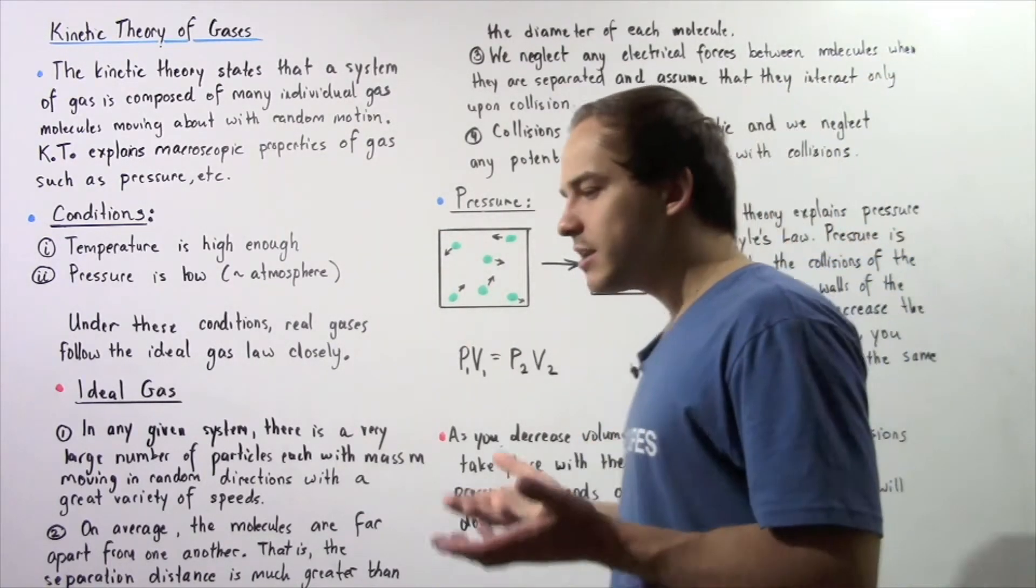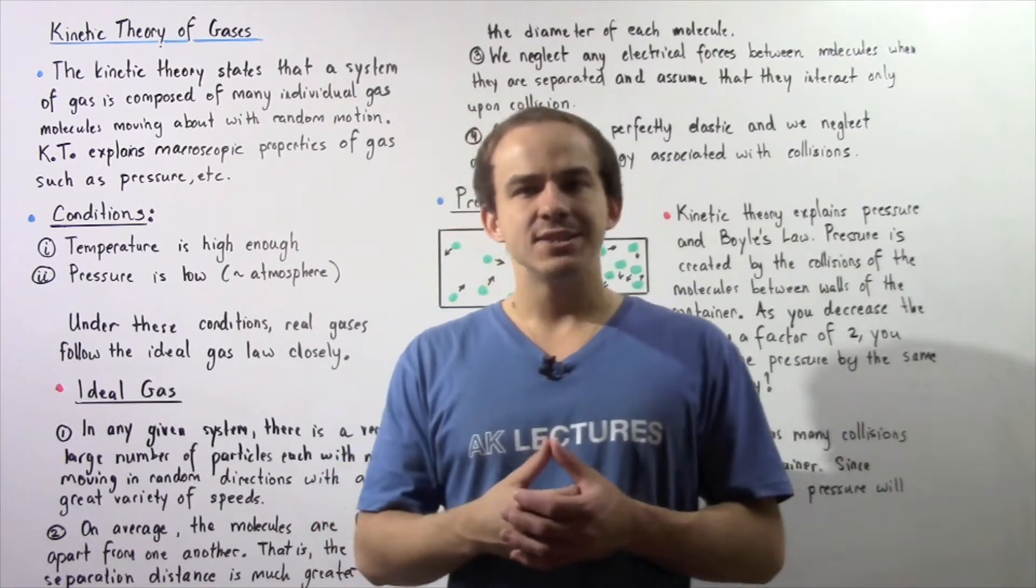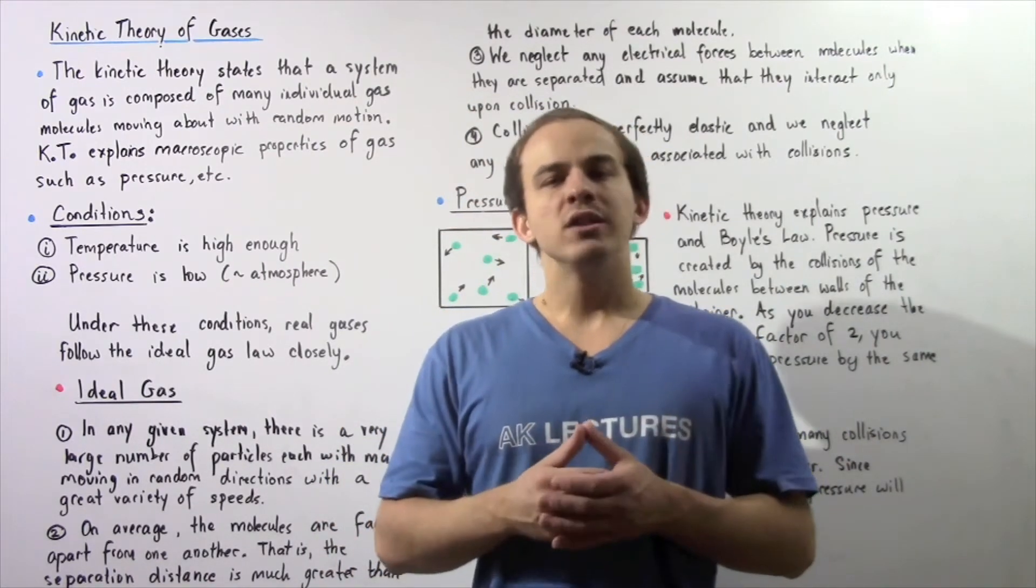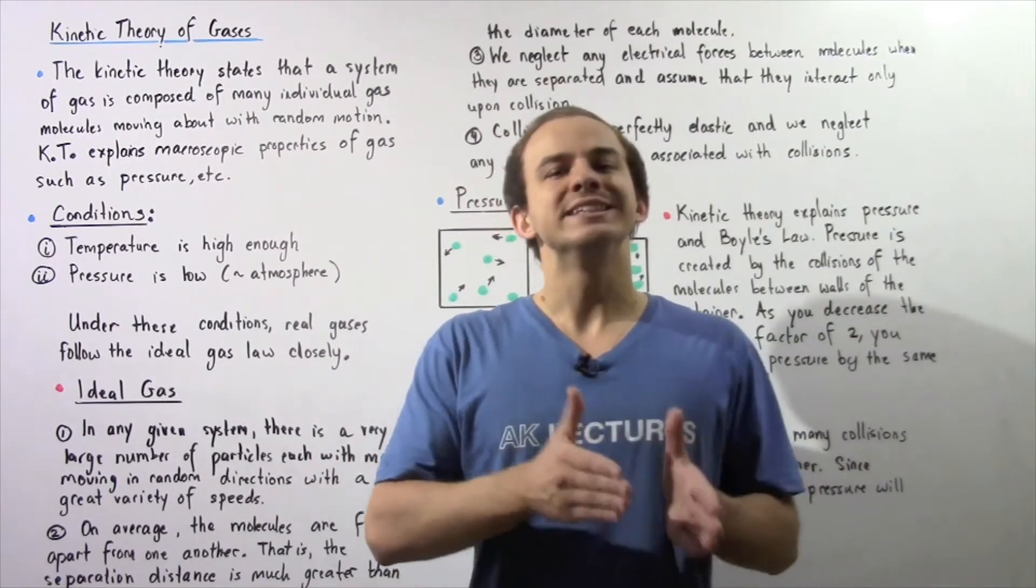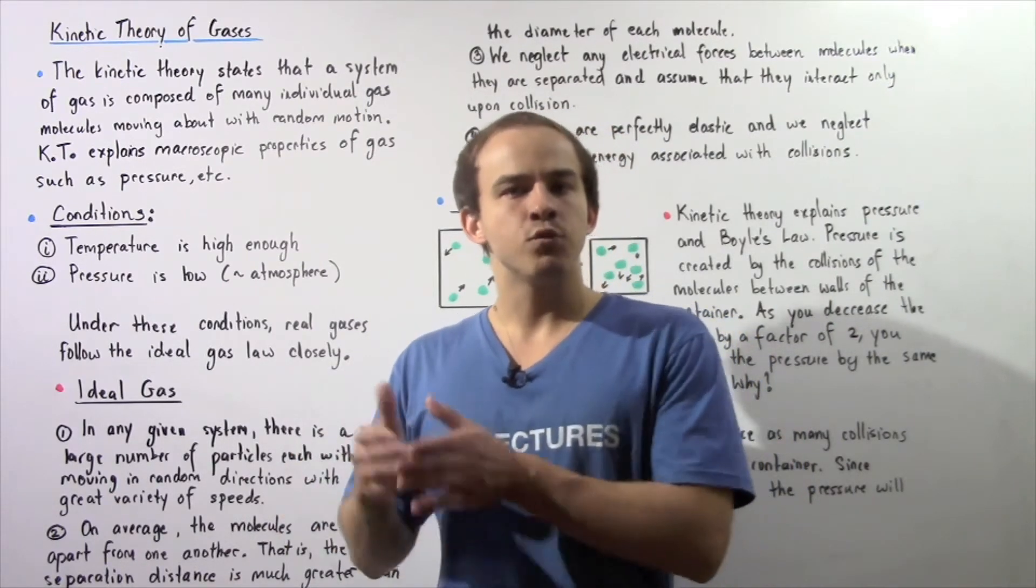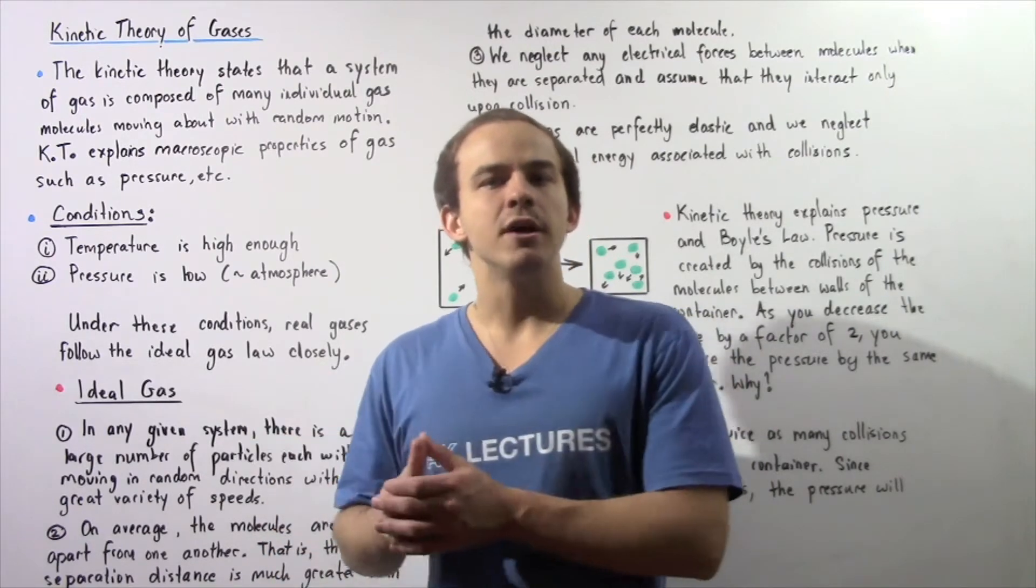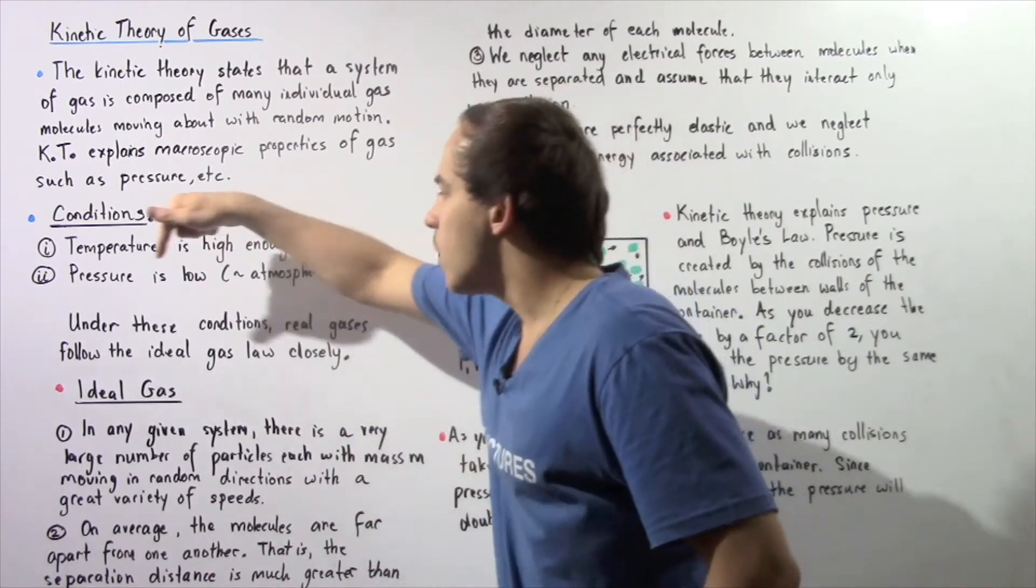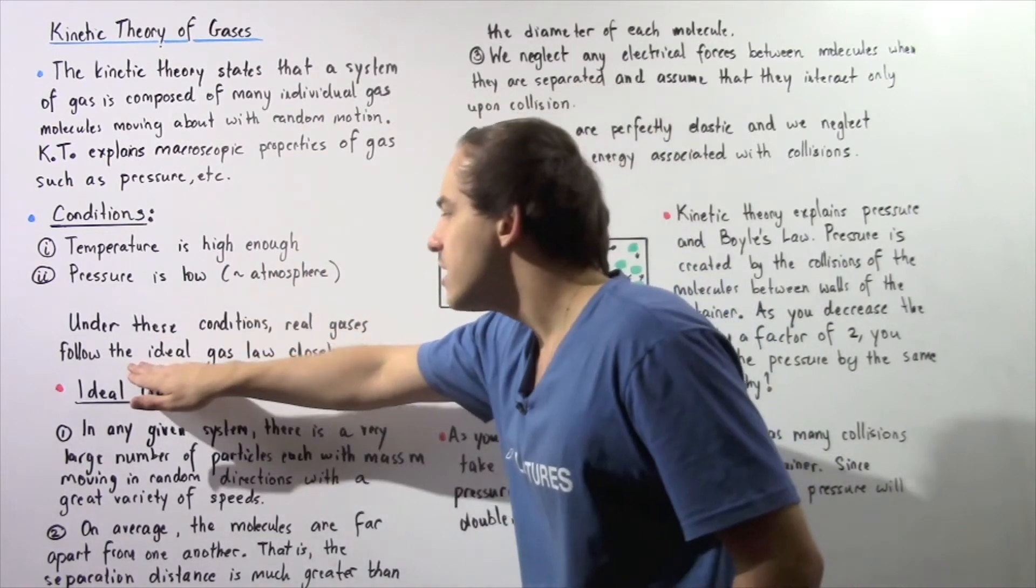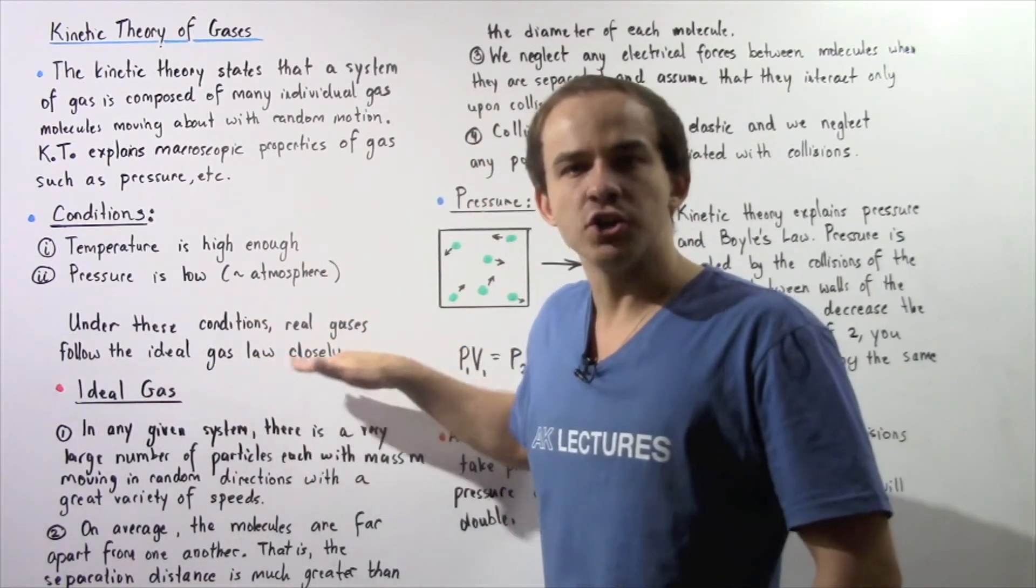Now why in the world do we study the behavior of ideal gases if ideal gases don't actually exist? Well, as it turns out, under certain conditions, we can approximate the behavior of real gases to that of ideal gases. So under these two conditions, real gases follow the ideal gas law very closely.